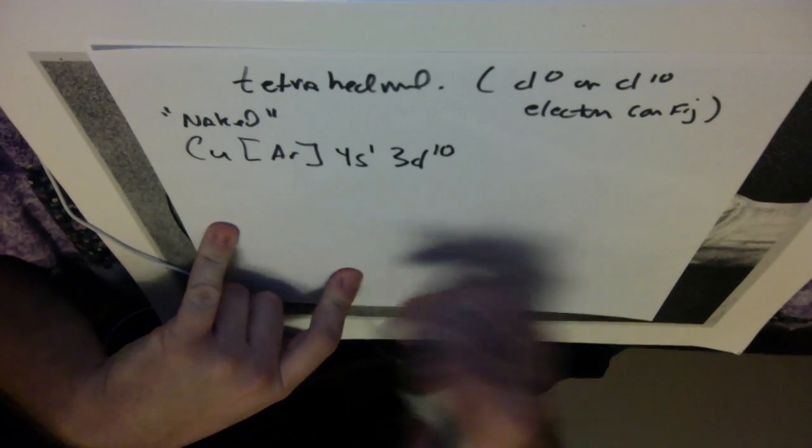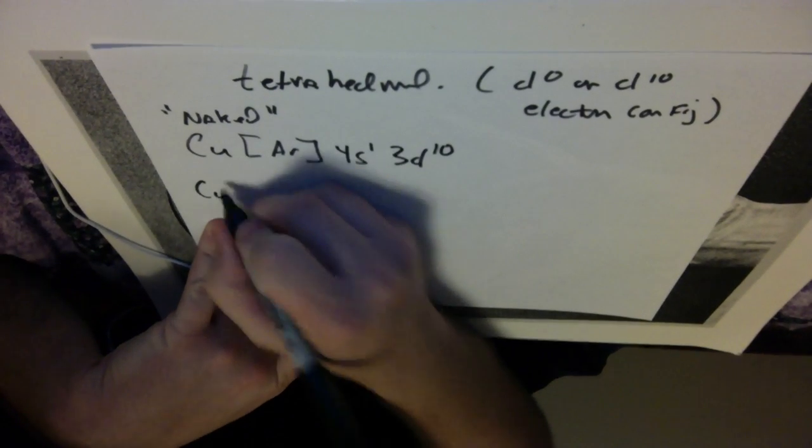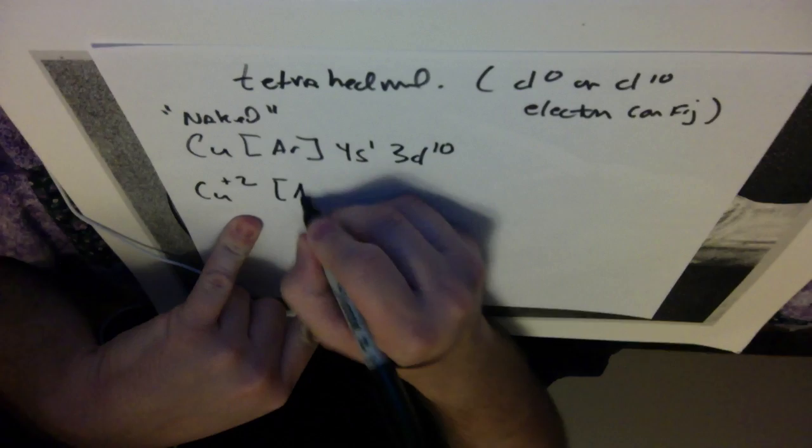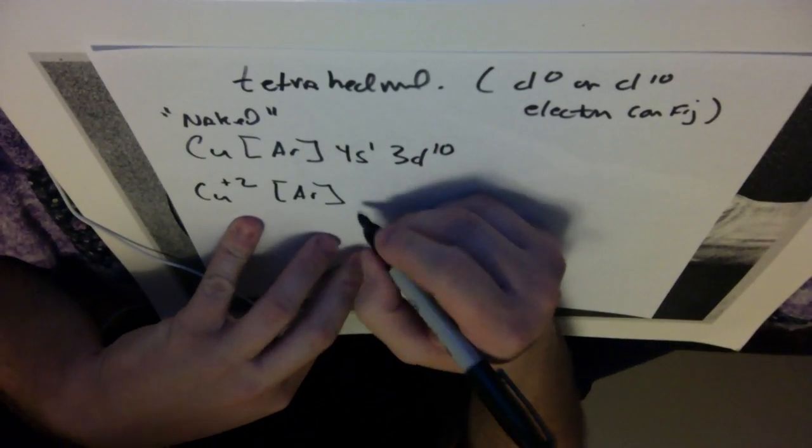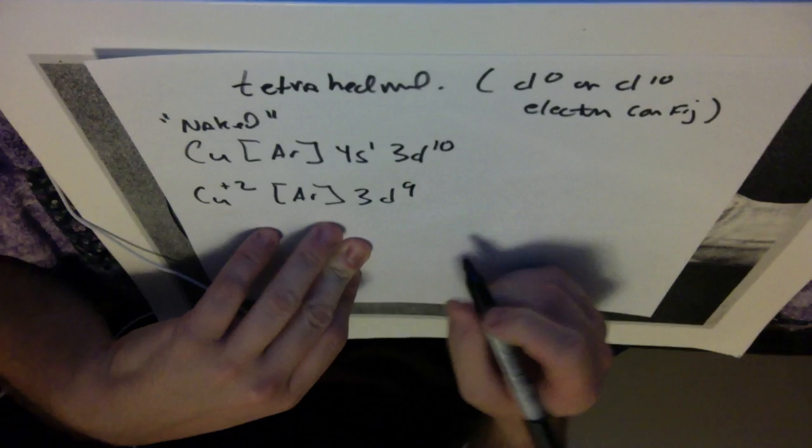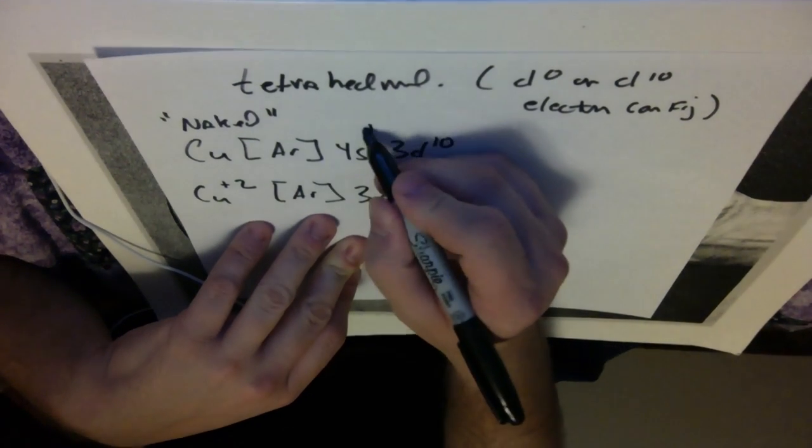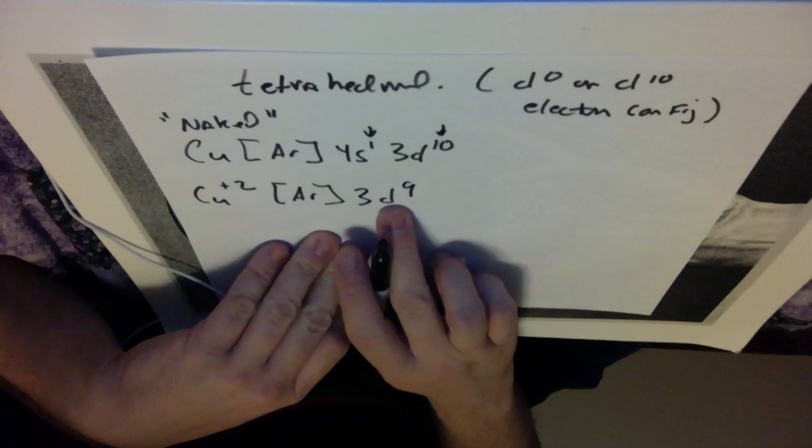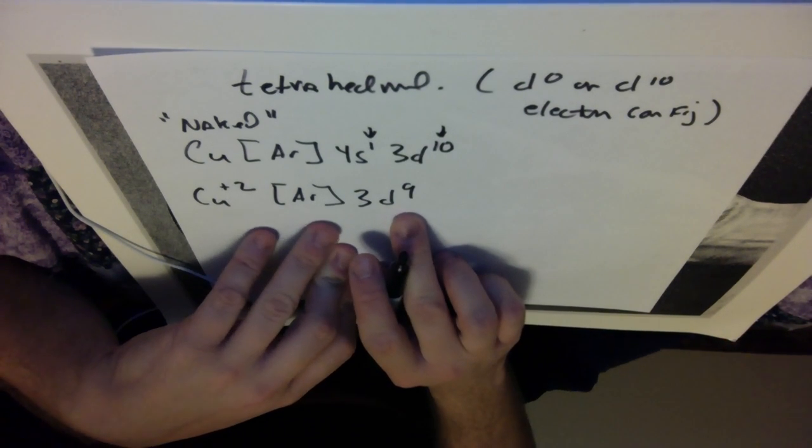And then what I'm going to do is I'm going to take copper, the copper two ion, so it's going to be argon, let's see, 3d9, because I took, I ionized the copper, I took the S away and then one of the D's away so I have 3d9 here, my copper ion.